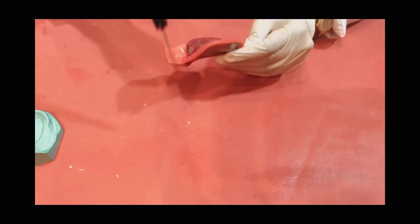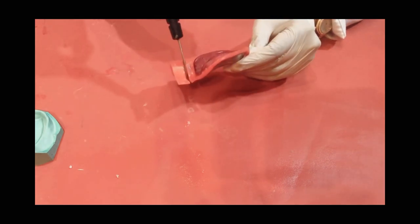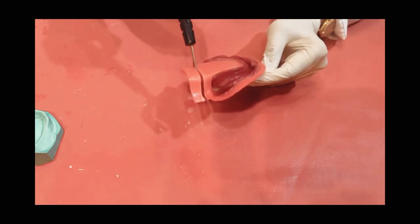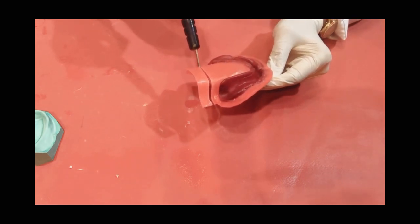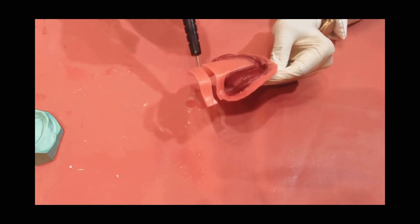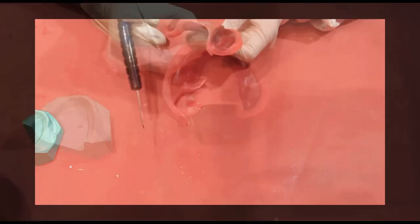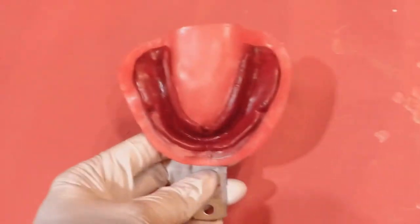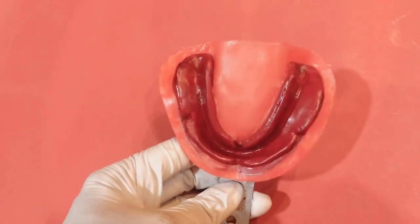No worries if you don't get it perfect the first time. You can see that the tongue space wax is extending beyond the extent of beading kept at the retromolar pad area. Remove the excess with a heated wax knife. Now we are done with beading.